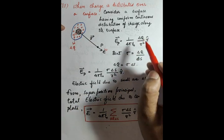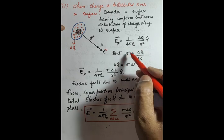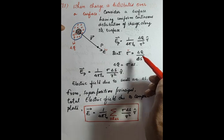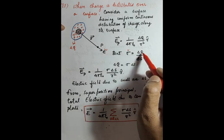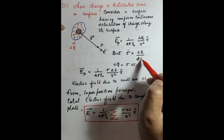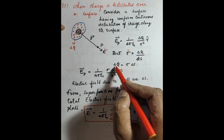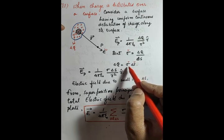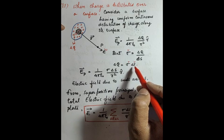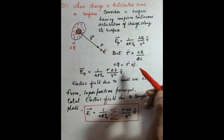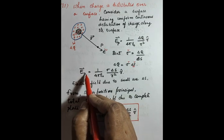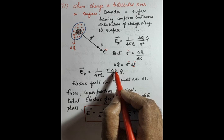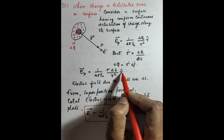We don't yet know the total charge, so we use sigma (σ), the surface charge density. σ = δq / δS, therefore δq = σ · δS. Substituting into the electric field expression: E_p = (1/4πε₀) × (σ · δS / r²) × r̂. Here r̂ shows the direction of the electric field.